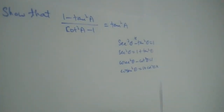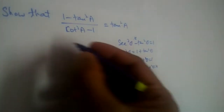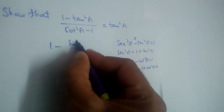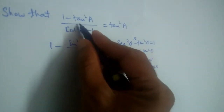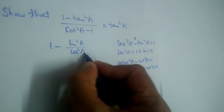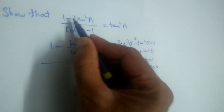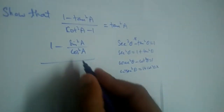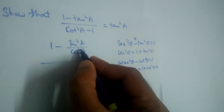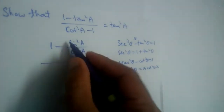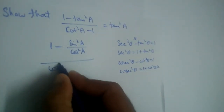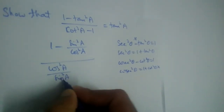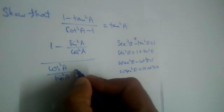So what should we do? We know that tan equals sine over cosine. Let us apply that formula. In place of tan we write sine over cosine, squared, and in place of cot we write cosine over sine, then minus 1.